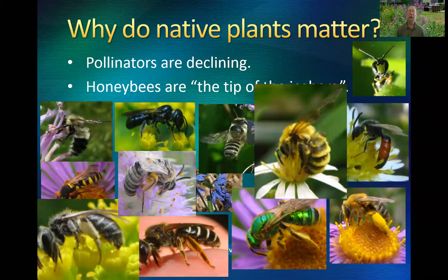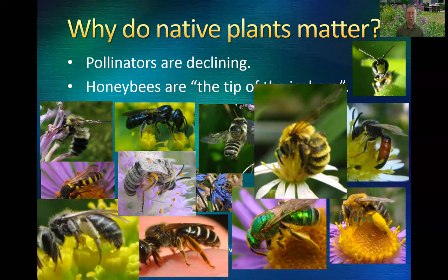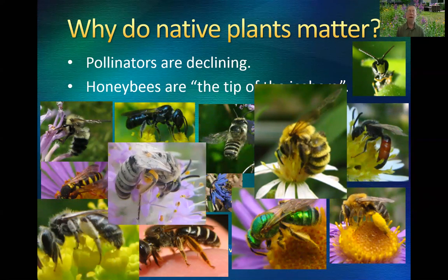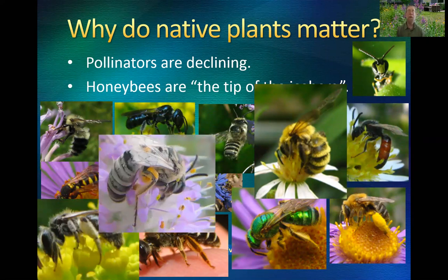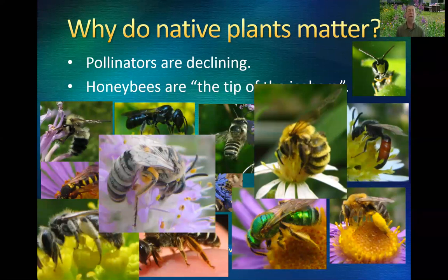The golden Alexander's mining bee in the lower left corner is very specific to pollen from golden Alexander's, a native plant in Minnesota, and related species in the parsley family. Then there's the aberrant cellophane bee — extremely specific, collecting pollen only from prairie clover. There are only three species of prairie clover in Minnesota; any place where those species are not present, this bee is not present. It's fascinating to know that there are these specialists.